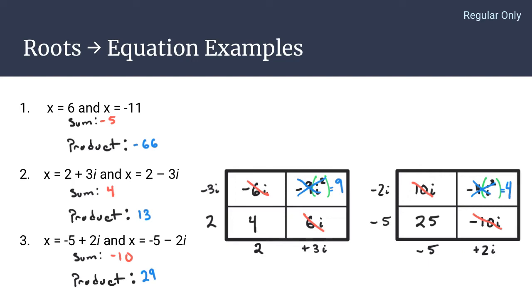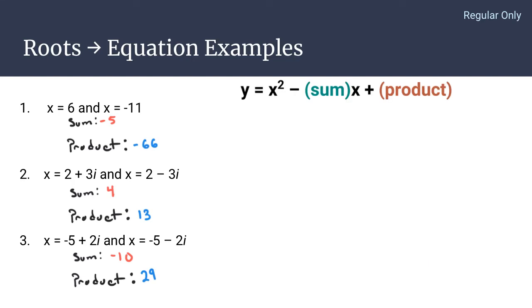And there we have our sum and our product of each of our two roots given for the examples. Now that we have our sum and our product, and we can remember what our simple setup is, we have x squared and the opposite of the sum times x plus the product. We can write these equations pretty quickly.